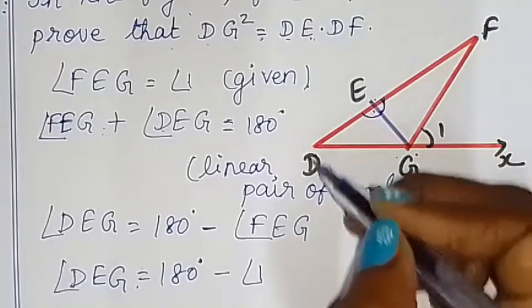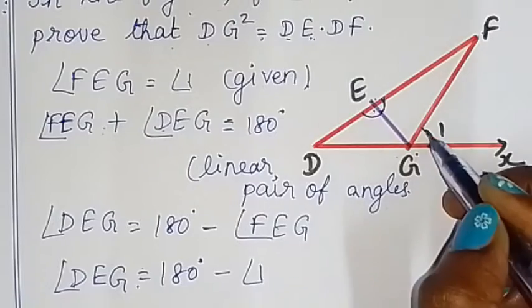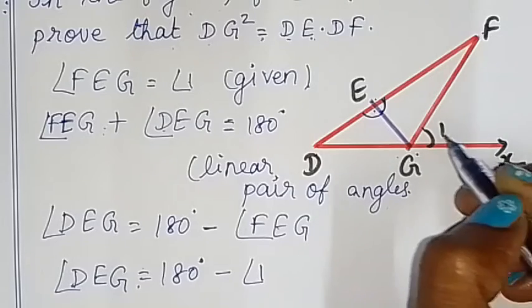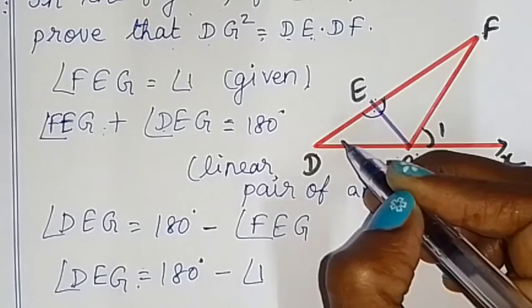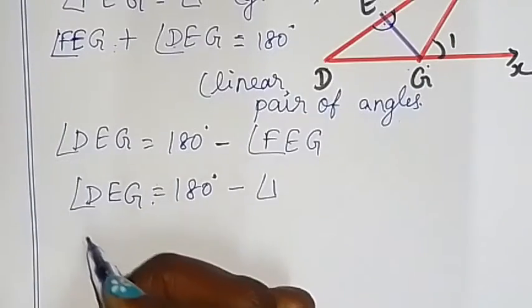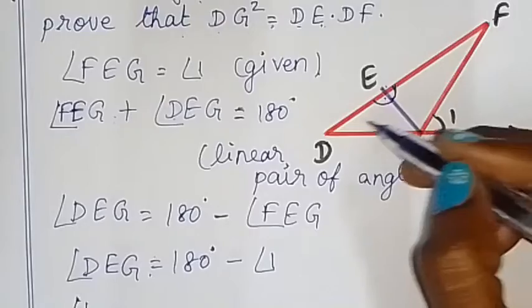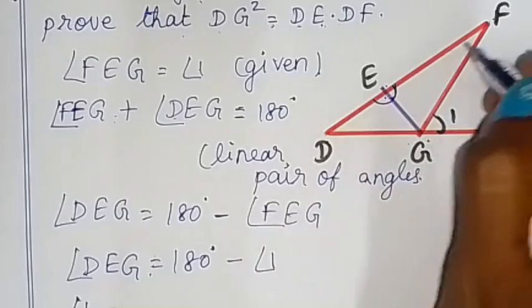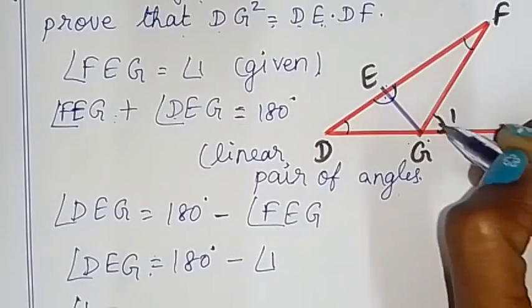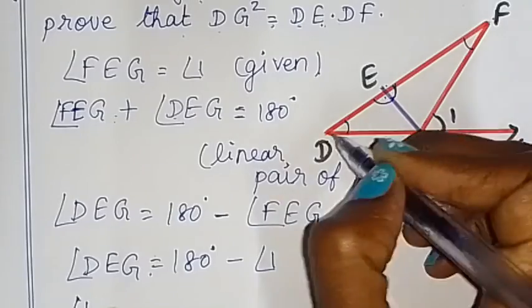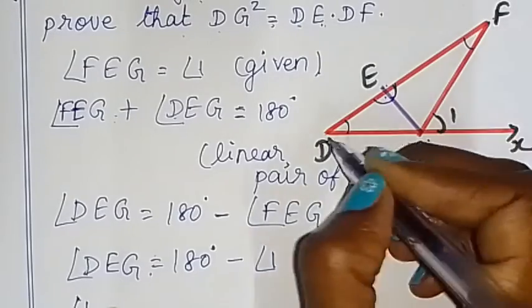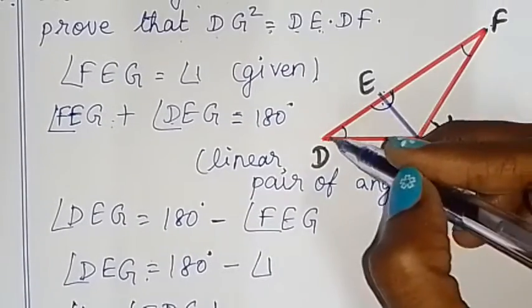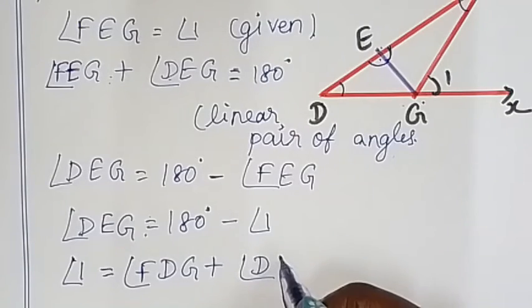Now, in triangle DGF, angle 1 is an exterior angle. By the exterior angle property, the exterior angle is equal to the sum of the two opposite interior angles. So angle 1 is equal to angle FDG plus angle DFG.